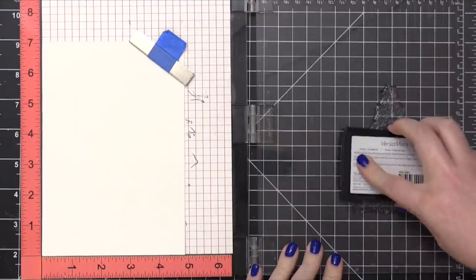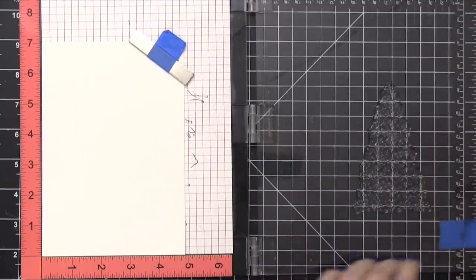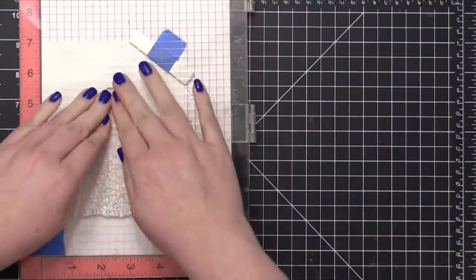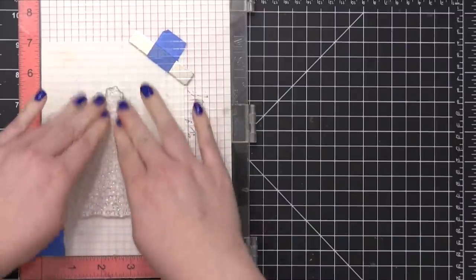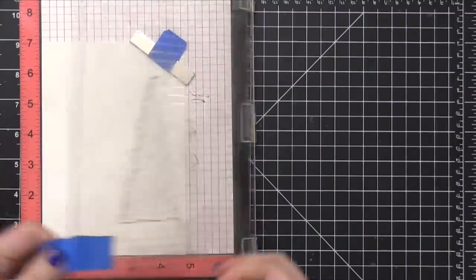I'm actually going to stamp it twice and this is because this watercolor paper is quite textured and it just really helps to stamp things twice on watercolor paper. You'll get a much better impression and it gives it kind of a second chance to fill in all of those gaps over the textured areas.